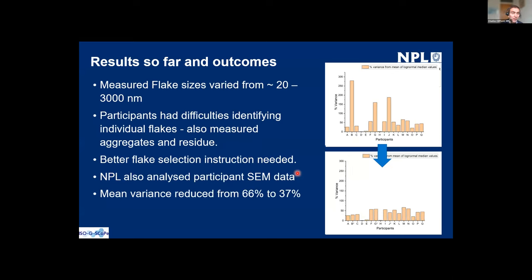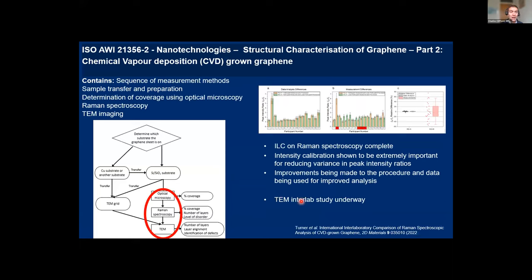The results so far show quite a scatter of results, which is expected as these are commercial samples with a wide range of flake sizes ranging from about 20 nanometers up to 3,000 nanometers. What was very clear was that participants had difficulties identifying what flakes to measure — some measured aggregates or agglomerates, multiple flakes thinking they were one flake, and some measured chemical residue on the surface thinking it was a flake. This showed that guidance in better flake selection and instruction is needed. Once NPL also analyzed participant SEM data, we saw that the mean variance was greatly reduced.